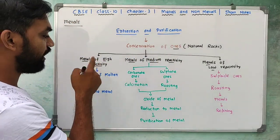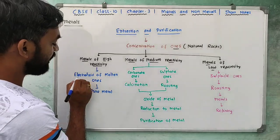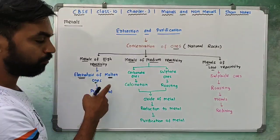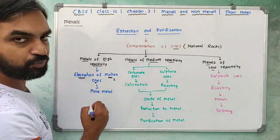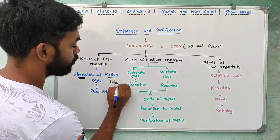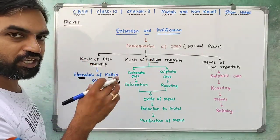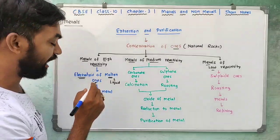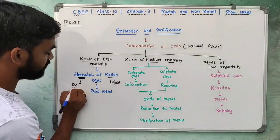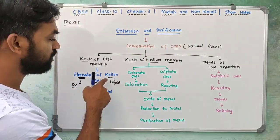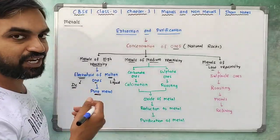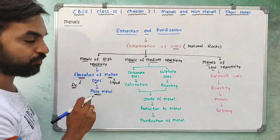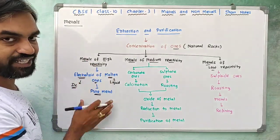Metals of high reactivity are extracted by electrolysis of molten ores. Molten means the ore is in liquid form. Direct current is used, and the pure metal is separated by electrolysis of molten ores.